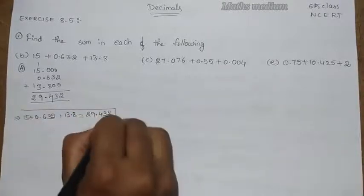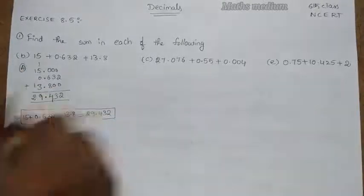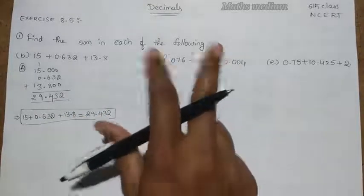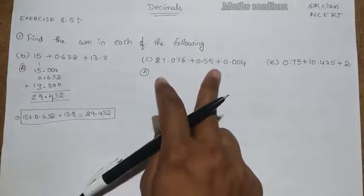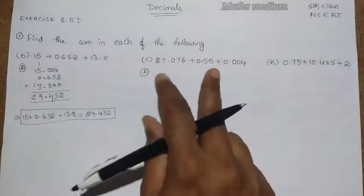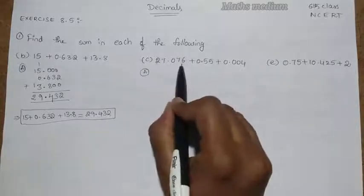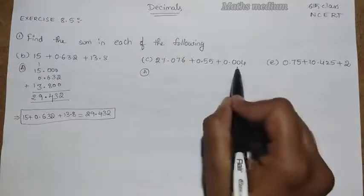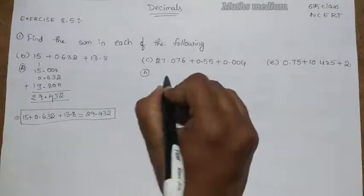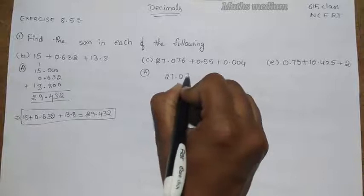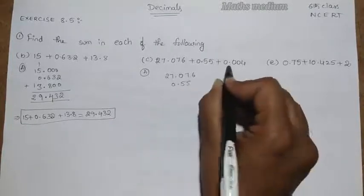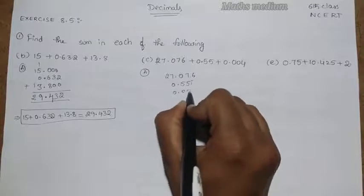Next coming to here. This is also same method but we have to choose up to which place value there is a decimal point. That is the main thing for the assumption. Here we have 1000th place again, and here also 1000th place, here up to 100th place. So take it 27.076, here 0.550, here 0.004.